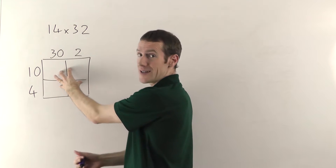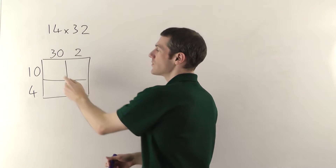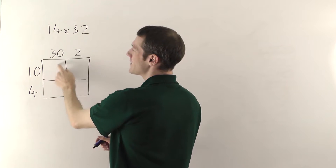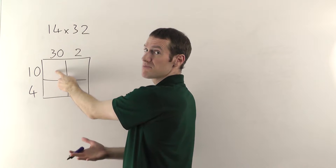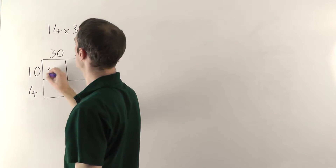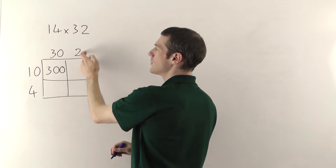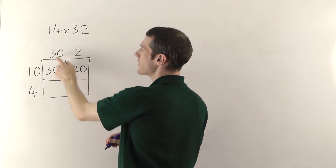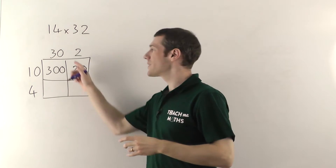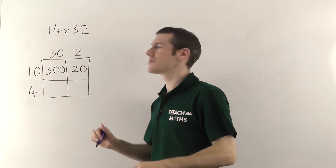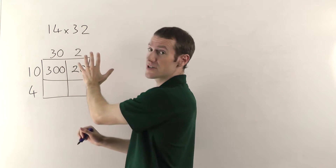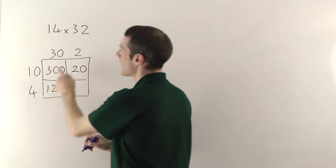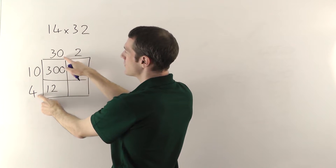You then fill out your grid — essentially it's like a times table grid. All you do is multiply the numbers on the outside and that gives you the numbers on the inside. So 10 times 30 goes in here — 10 times 30 is 300. 10 times 2 goes here, that's obviously 20. Then 4 times 30. Now if you struggle with the zeros, working out how many you should have, it's actually very easy. Just ignore all the zeros to start with. You do 4 times 3 which gives you 12, and then you look at how many zeros you've got in the question.